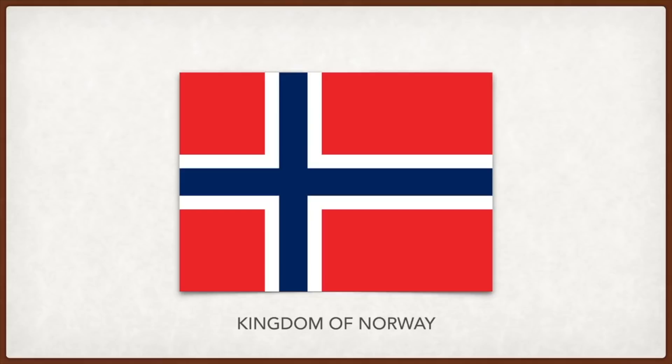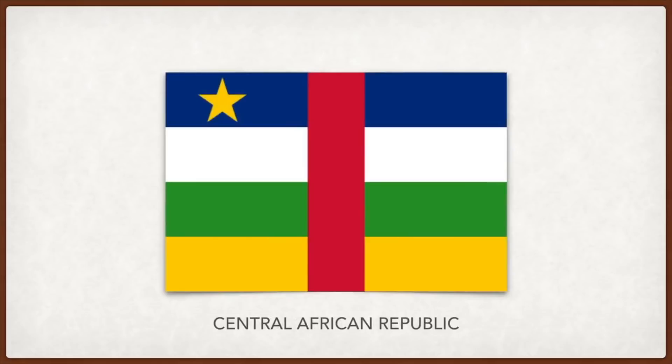Central African Republic: as a former French colony, the red, white, and blue come from the French flag, and the red, yellow, and green are the pan-African colors, brought together as a sign of solidarity. The red vertical stripe represents the link between Europeans and Africans, the yellow star is for future progress and unity, blue is for liberty and the sky, white for purity and equality, green for the forest, yellow for the savannahs, and red for the blood of all mankind.